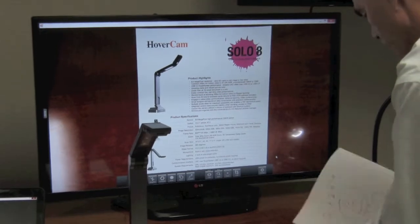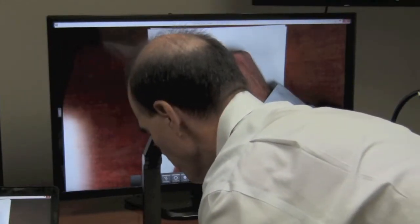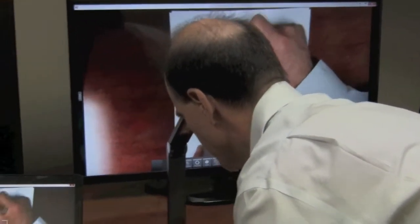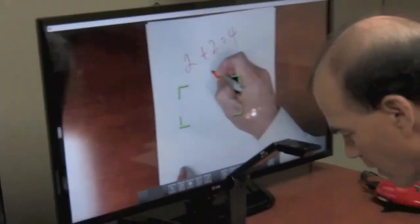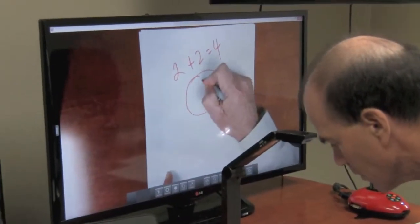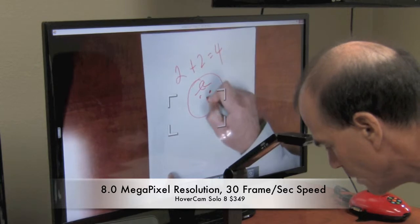And then let's see how the Hovercam does. So I'm now writing with the Hovercam, so 2 plus 2 equals 4. And then let's go ahead and draw my little Charlie Brown figure again.